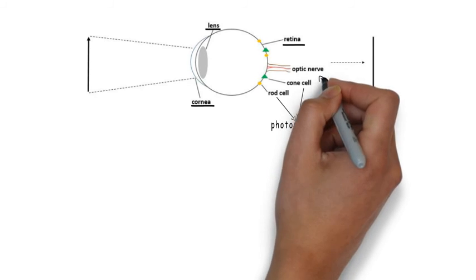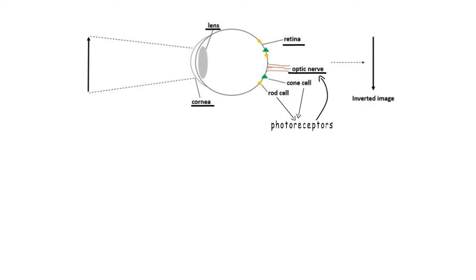This electrical signal is relayed to the brain via the optic nerve and the brain forms an image of what you are seeing.